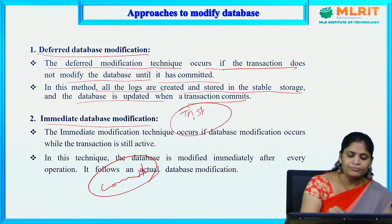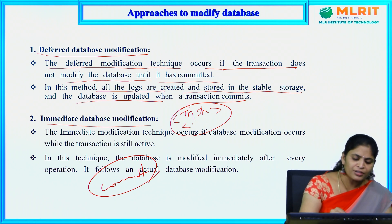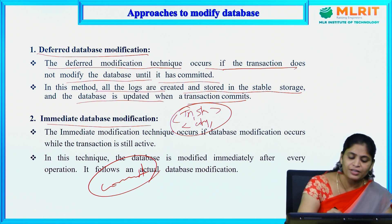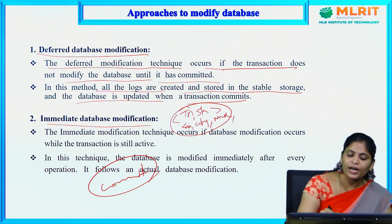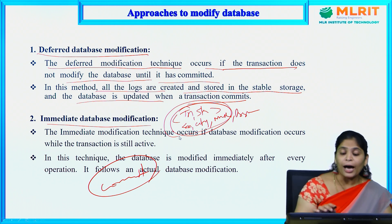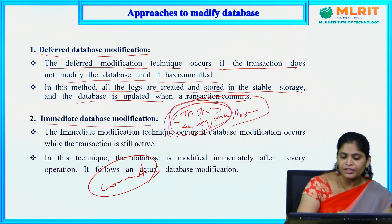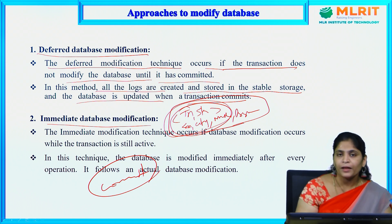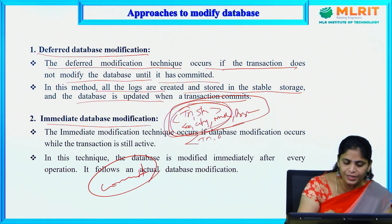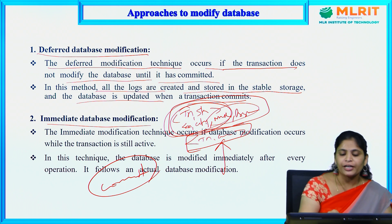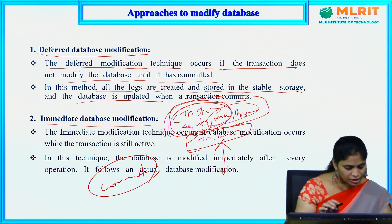For example, the log is: TN start, then an update record such as T1, city, Noida, Bangalore. This log is created but the database will not be updated yet because there is no commit statement. Only after TN commit is seen will we modify the data in the database permanently.